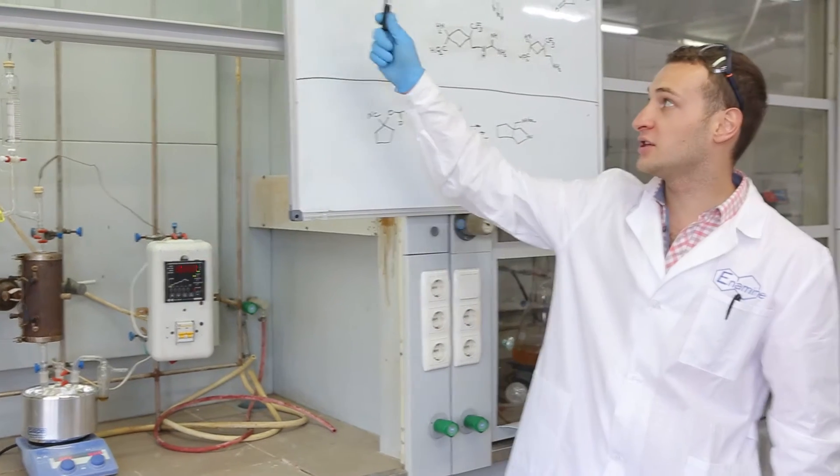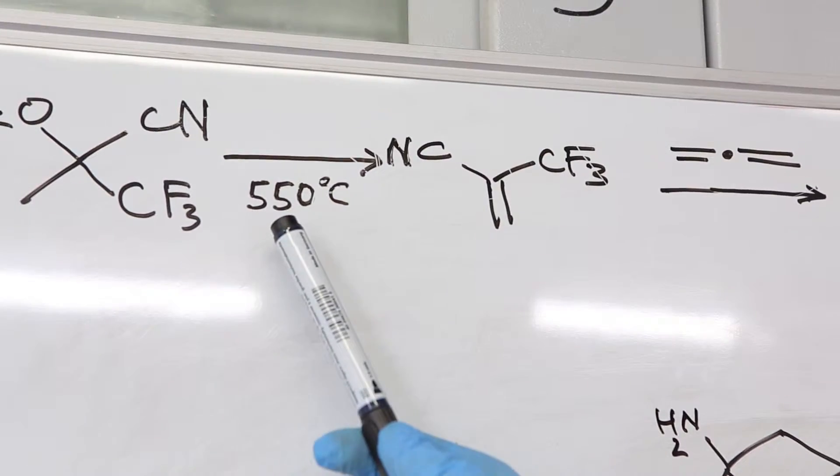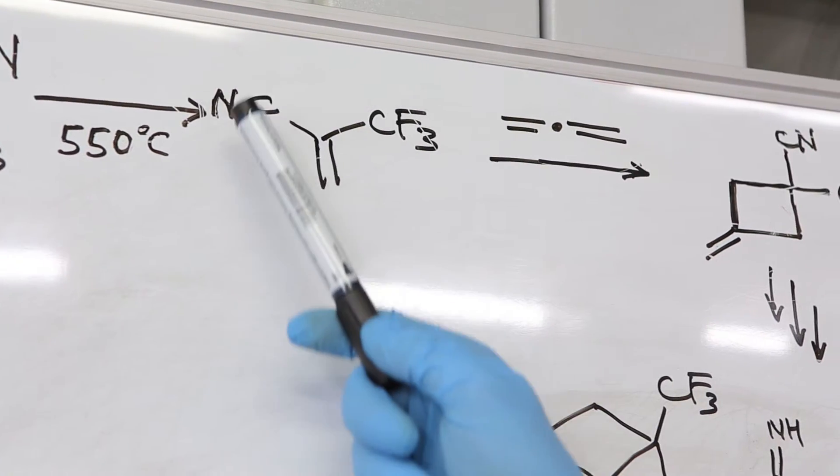For example, this cyanohydrin acetate can be pyrolyzed by passing through a glass tube heated to 550 degrees Celsius to produce alpha-trifluoromethyl acrylonitrile.